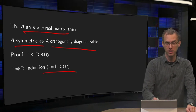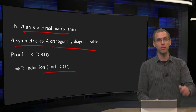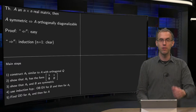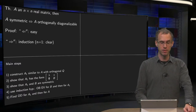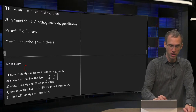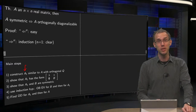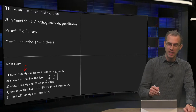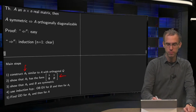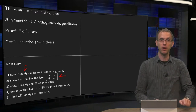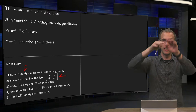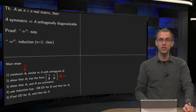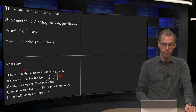We will use induction for that. The n=1 case is clear, because a 1×1 matrix is already diagonal. For the induction step: first we construct a matrix A1 which is similar to A via some orthogonal matrix Q. Then we show that A1 has the form: lambda in the top-left, zeros below that, some entries after lambda, and then a k×k block B. So the matrix B is one dimension smaller than A.